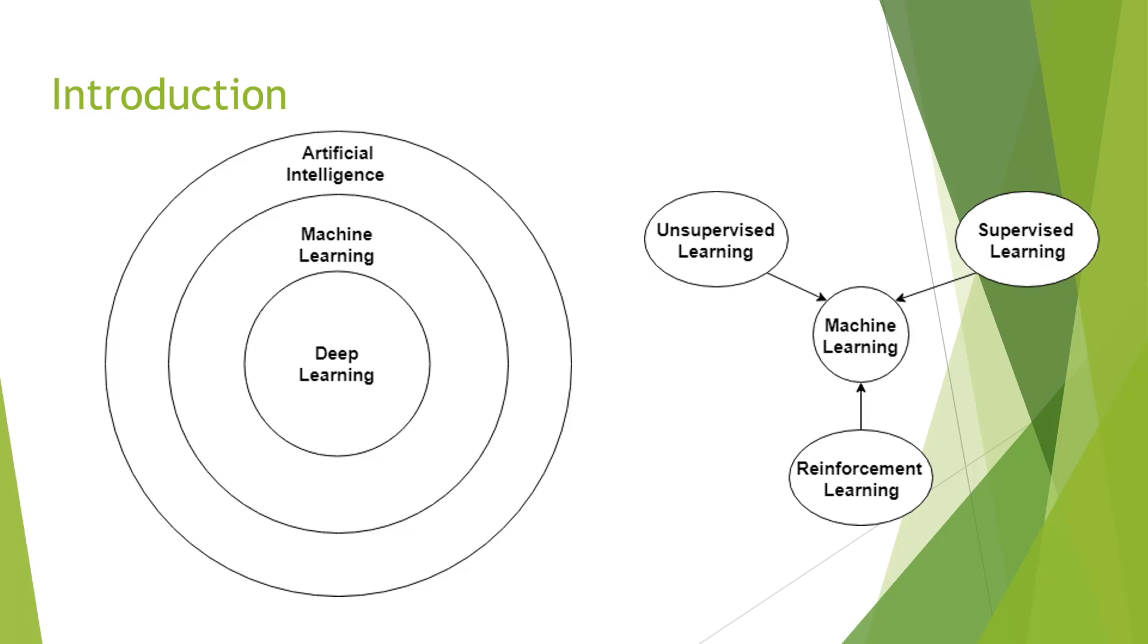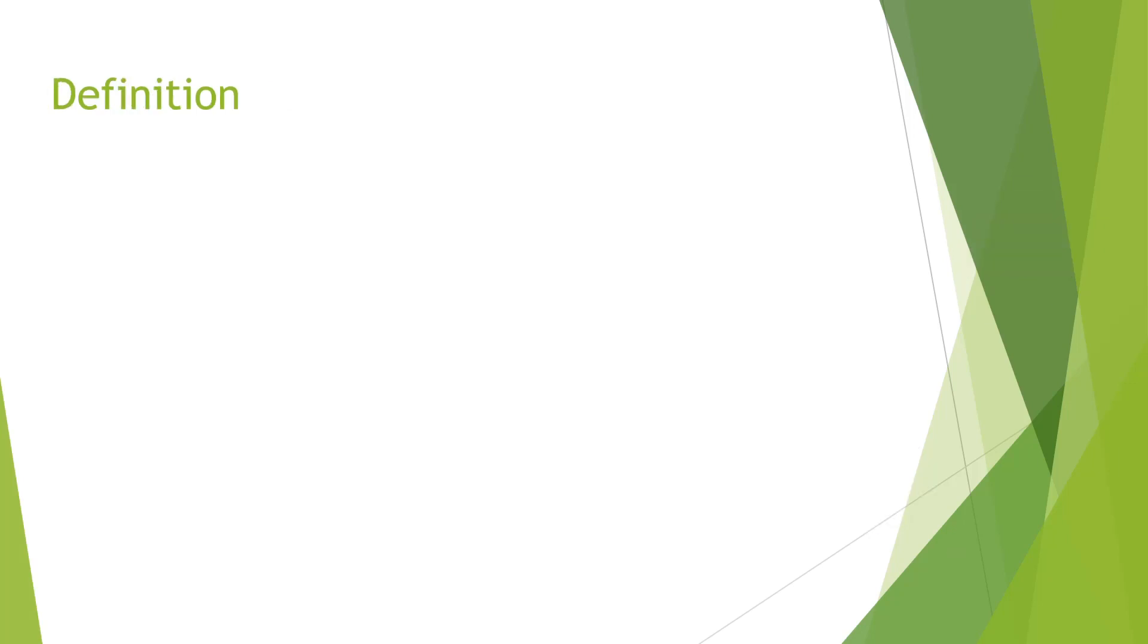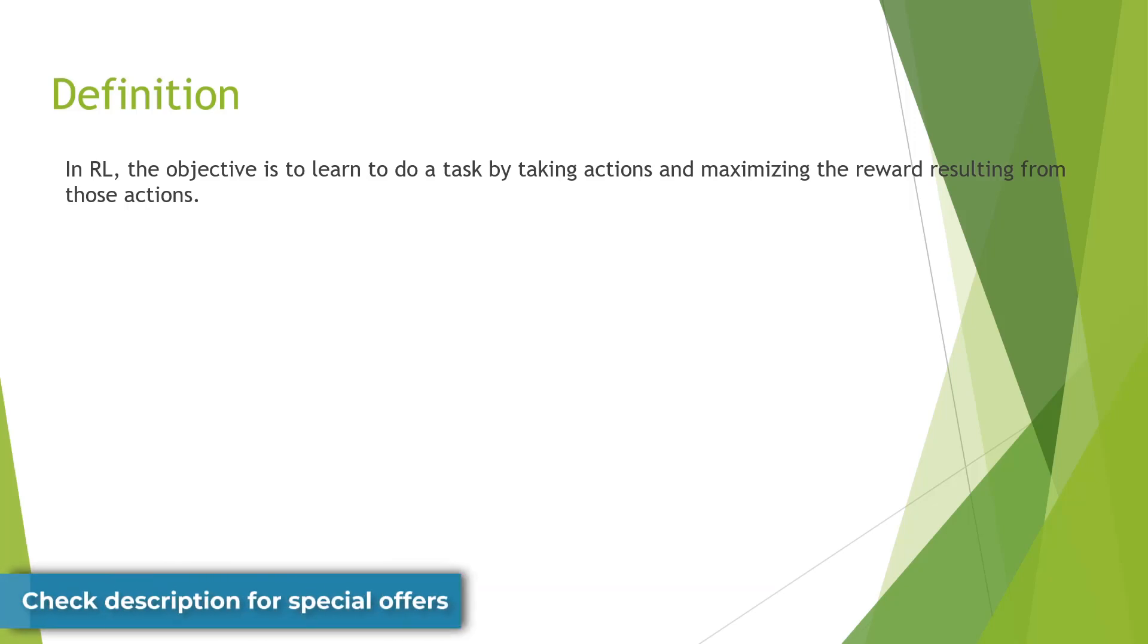Now let us take a more formal approach and define reinforcement learning. The objective in reinforcement learning is to learn to do a task by interacting with the environment using actions and maximizing the total reward resulting from those actions.